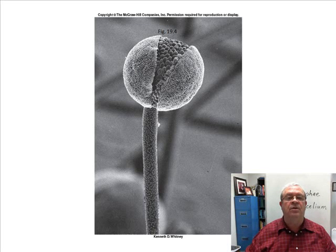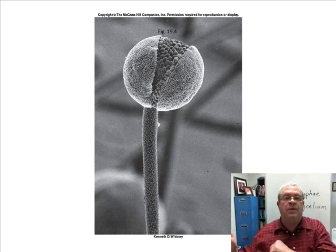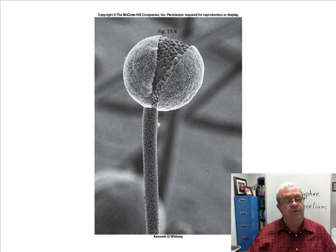Here's one of those little spore producing structures right here. And all the little spores inside, the outer surrounding case has split open. The spores would then go off in the breezes to spread Rhizopus to other pieces of bread. Alright, that's it for this one.